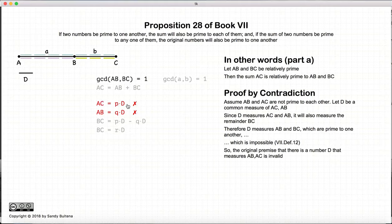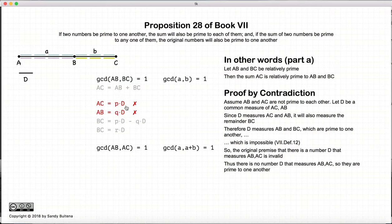So our original premise, that AC and AB have a common measure of d, or a common denominator d, again not equal to one, this is invalid. And if there is no common measure d that measures both AC and AB, AB and AC are relatively prime.